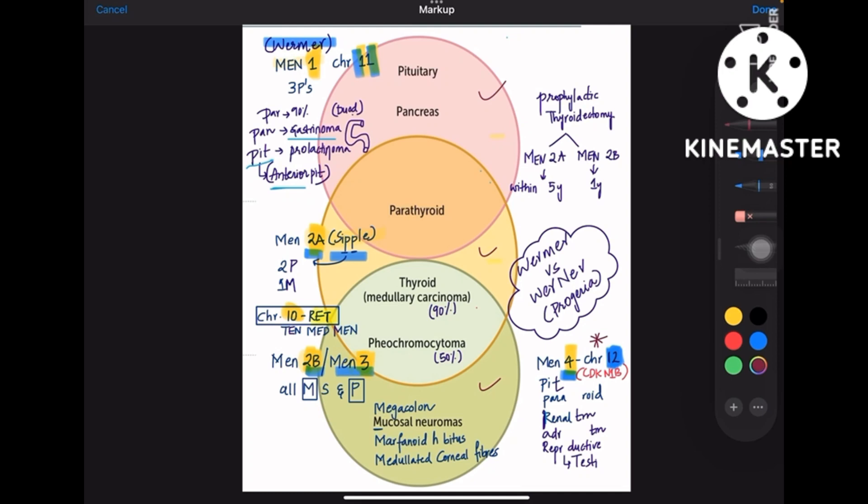Now let's get started with the first one which has pituitary, pancreas, and parathyroid. How to remember where to place these organs in this pie chart? First remember parathyroid and thyroid are anatomically also closely related, so you have to put them together in the middle circle.